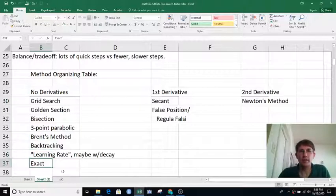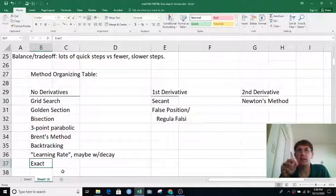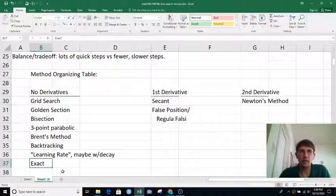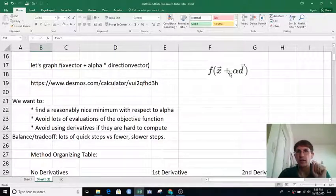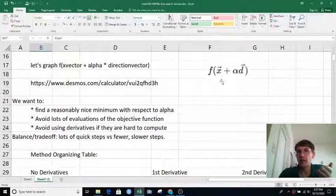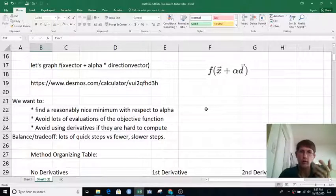It is in some cases possible to do exact line search. If your function is a nice simple algebraic expression, you can plug in your search direction and your current position, leave alpha as a variable, get a new expression, and then minimize that expression by taking the derivative, setting the derivative equal to zero and solving for alpha.